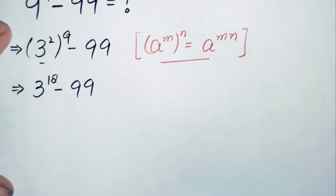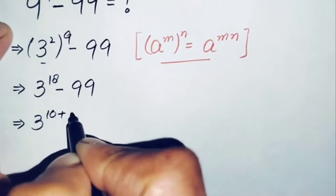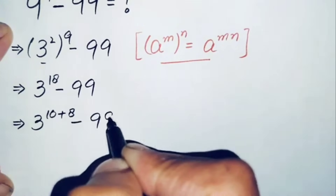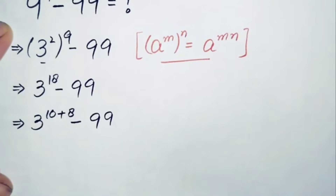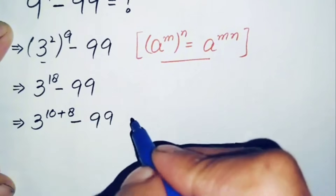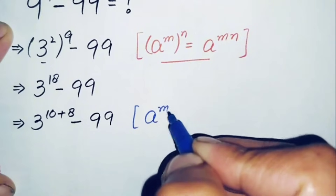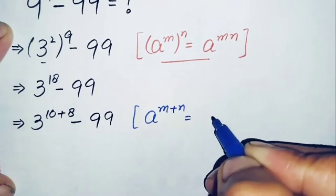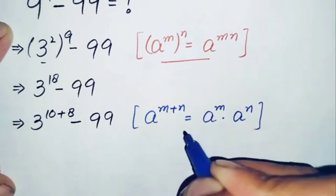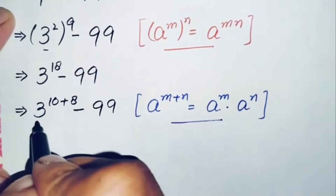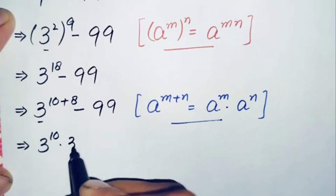We will try to change this power 18 to the sum 10 plus 8. Then using the exponential identity r^(m+n) = r^m × r^n, this first term will become 3 raised to power 10 times 3 raised to power 8, minus 99.